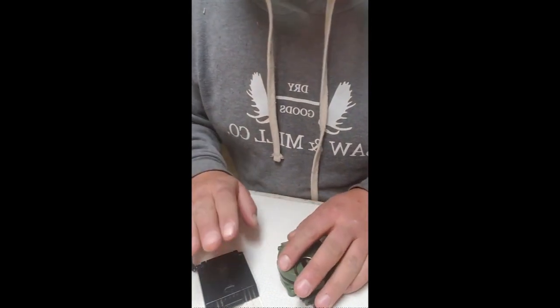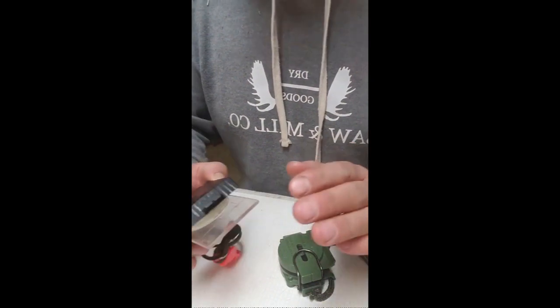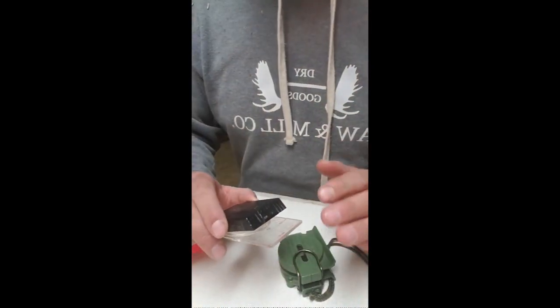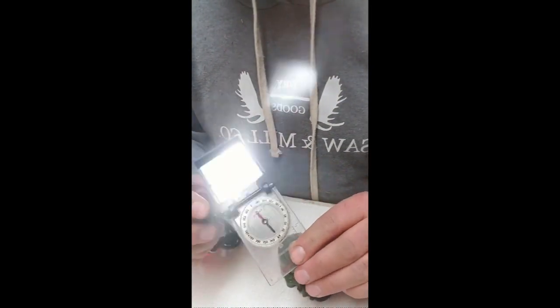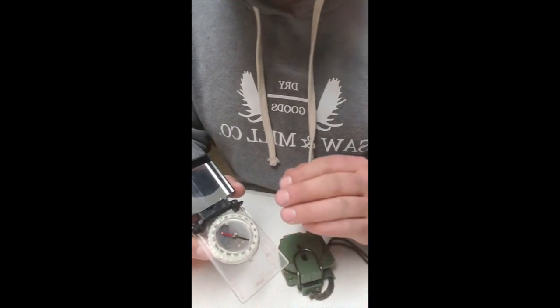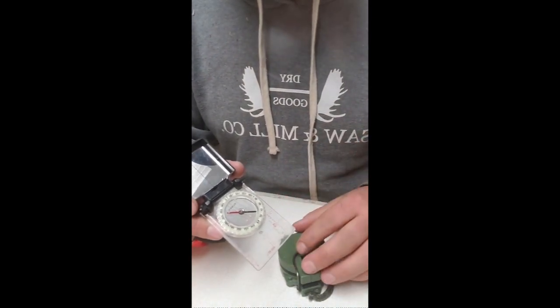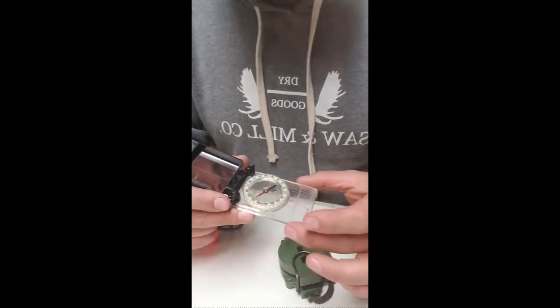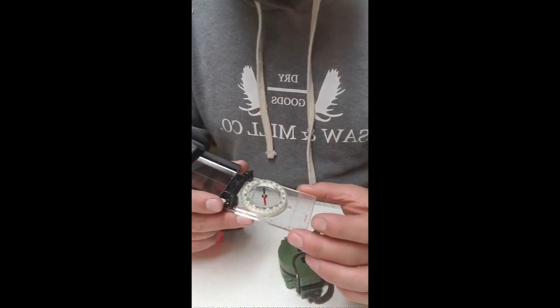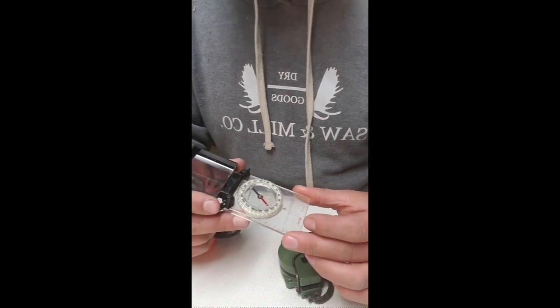Otherwise, I would go with the MCA. This is what's called a base plate or an orienteering compass. And the main feature, or the component to this which makes it what it is, is that because it has this clear body, you can use this as a protractor on your map.